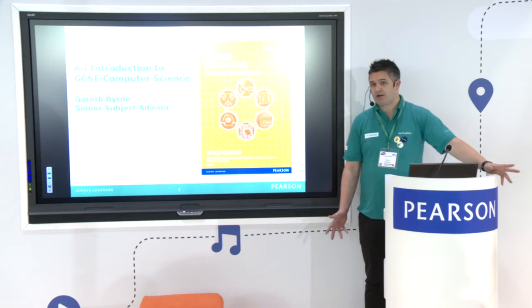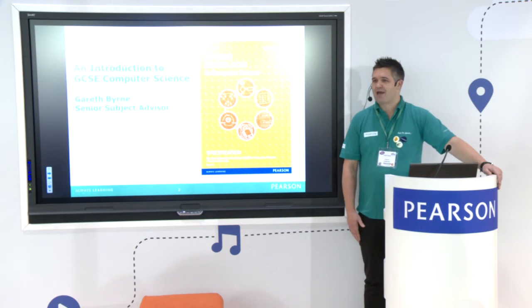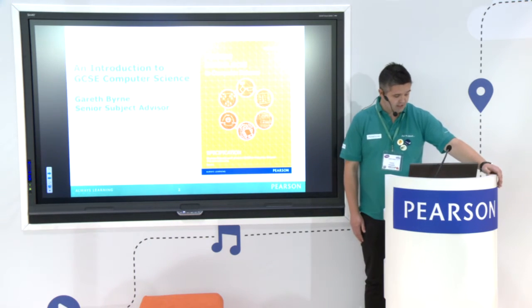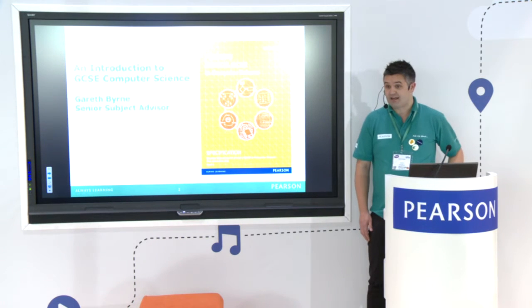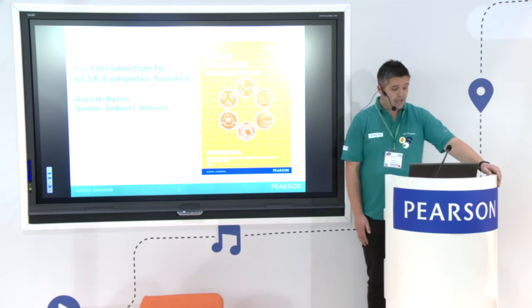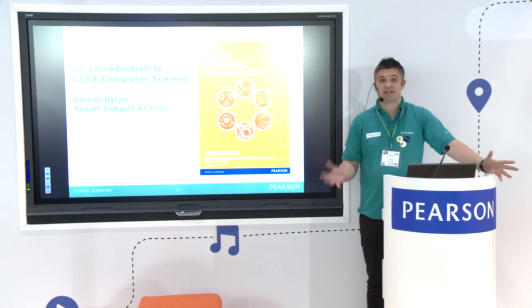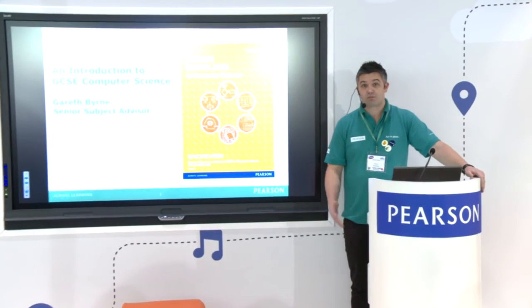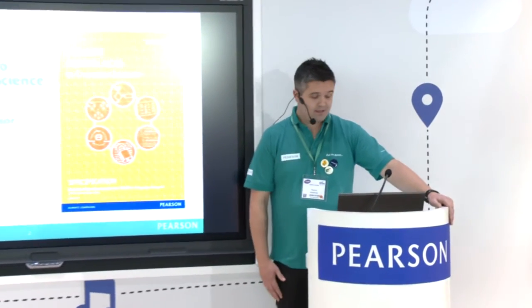I'm going to start by asking a question: what is computer science? I get asked quite a lot to define it, and I get an awful lot of responses. A lot of people say it's programming; others say it's problem solving or looking at solutions to everyday problems using programming. Some people say it's witchcraft! What we've tried to do is put together a definition: computer science is the study of how computer systems work and how they are constructed and programmed, and it also includes a body of knowledge and a set of techniques for solving problems, as well as practical programming skills.